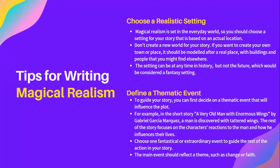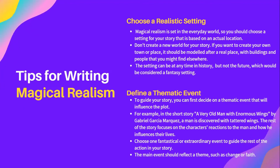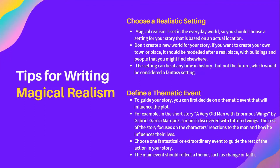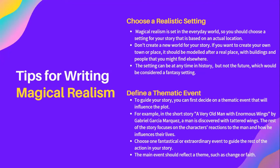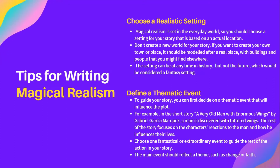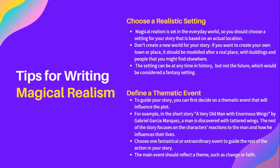You should also define a thematic event. To guide your story, you can first decide on a thematic event that will influence the plot. For example, in the short story A Very Old Man with Enormous Wings by Gabriel Garcia Marquez, a man is discovered with tattered wings. The rest of the story focuses on the characters' reactions to the man and how he influences their lives. Similarly, you can choose one fantastical or extraordinary event to guide the rest of the action in your story. The main event should reflect a theme, such as change or faith.